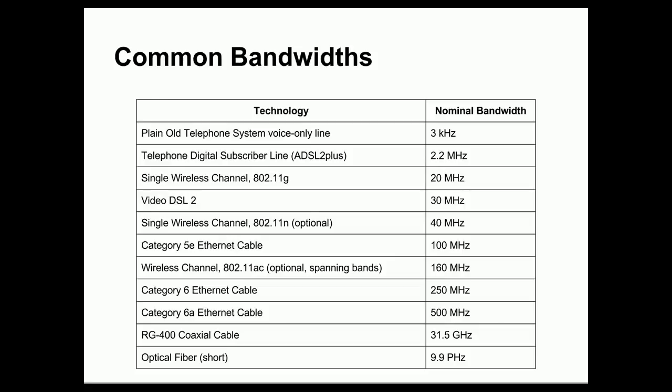Now, here are some common bandwidths of some actual technologies. A voice-only line with a plain old telephone system has a nominal bandwidth of about 3 kHz. A telephone digital subscriber line using the ADSL 2 Plus standard increases that nominal bandwidth to 2.2 MHz. If I'm using a single wireless channel following the 802.11 G specification, I can have a 20 MHz nominal bandwidth. And Video DSL 2, which is an extension of the digital subscriber line technology, supports 30 MHz bandwidth.